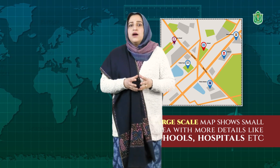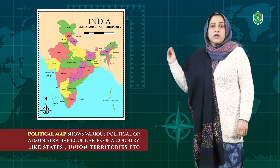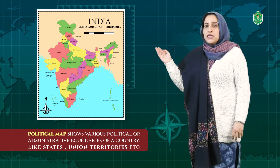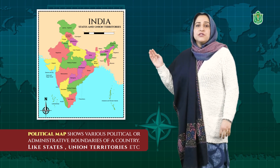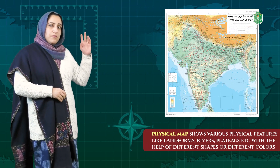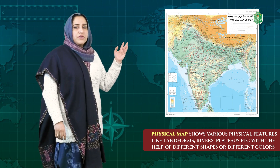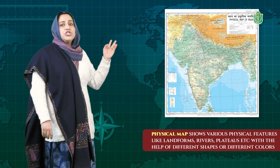According to purpose, we can make various maps. We have a political map, which shows the various political or administrative boundaries of a country — the different states differentiated with different types of lines. Another type is a physical map, which shows various physical features or landforms like mountains, rivers, and plateaus, using different shades or colors.